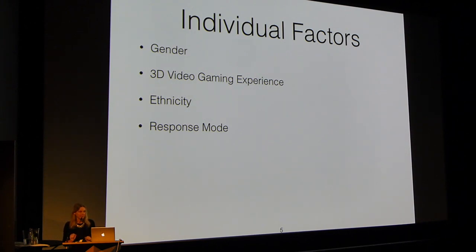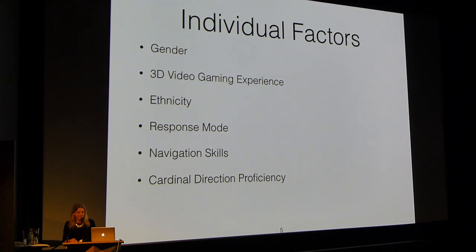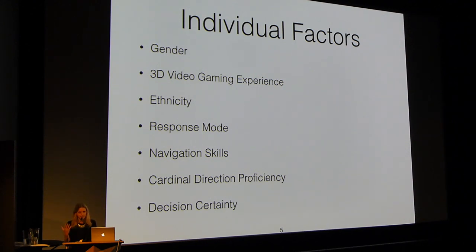There's also response mode — if I give a picture like a top-down view, or ask for a written description like back-left or front-right, will there be differences in how we think about space? There's navigation skills — if you're really good at reading maps or are a good or bad driver, does that translate into navigational strategy? There's cardinal direction proficiency — if you're good at knowing where north, south, east, west are, maybe you're better at knowing where you are in space. And there's decision certainty — if you're really sure of where the start is, does that correlate to how good your strategy is? Because maybe if you're not sure, you've messed up your heading along the way.